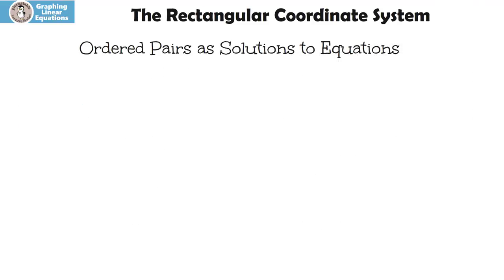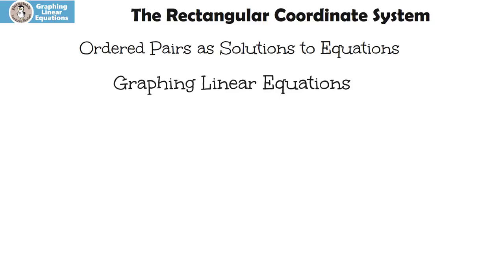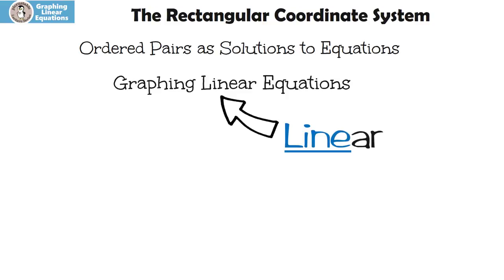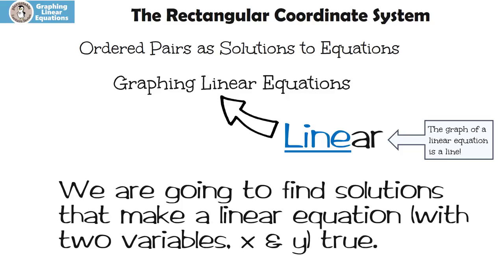Before we finish this video, we should talk about ordered pairs as a solution to equations — this is actually how we're really going to graph. The name of these videos is Graphing Linear Equations. Hopefully you see that we have the word 'linear,' and in the word linear is 'line.' The graph of a linear equation is a line. We're going to find solutions that make a linear equation with two variables, x and y, true.